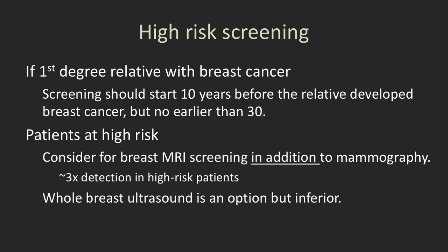For high-risk screening: if a patient's first-degree relative has breast cancer, screening should start 10 years before that relative developed breast cancer but no earlier than age 30. So if a patient's mum got breast cancer at 45, she should start mammographic screening at 35. You should also consider breast MR screening done either annually or biannually in addition to mammography — note this is not in place of mammography, because certain types of breast cancer such as low-grade DCIS will be more visible on mammography than on MRI.